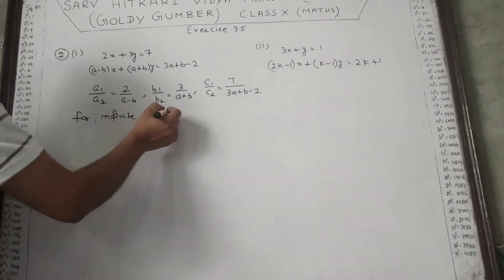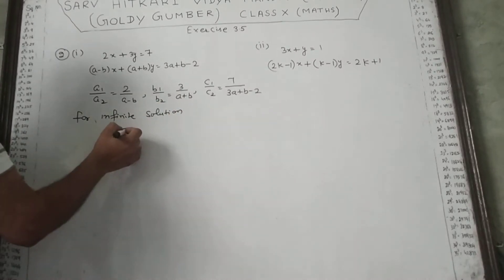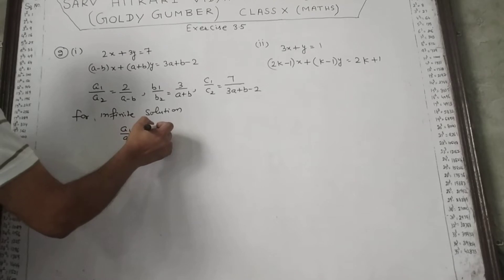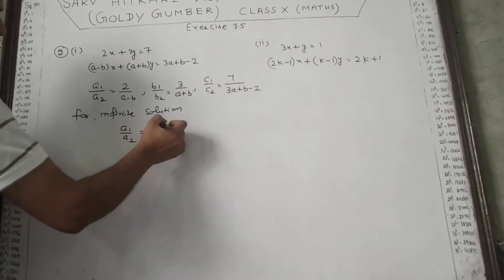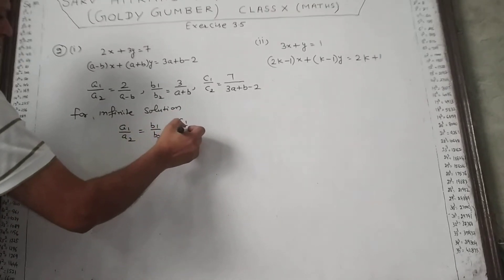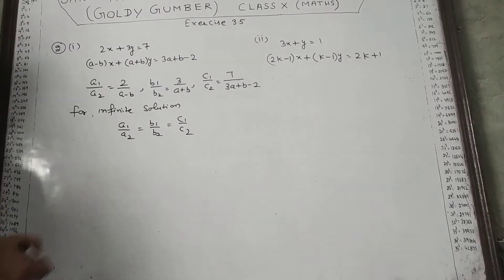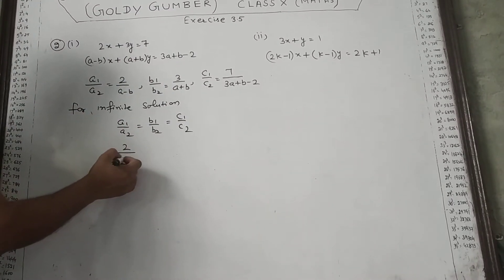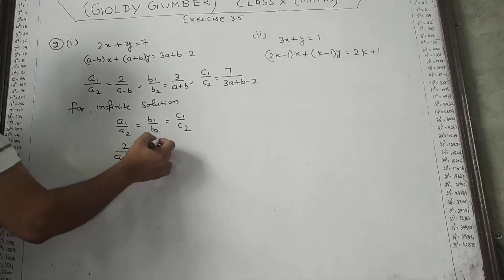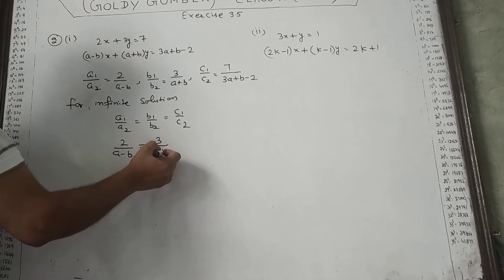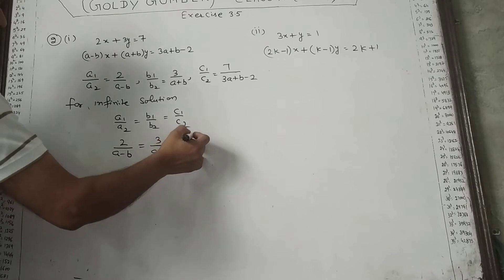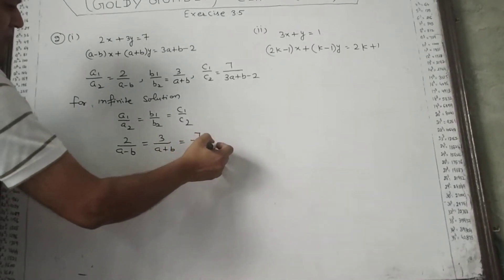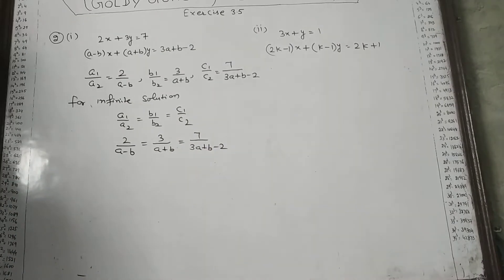For infinite solutions, the condition is a1 upon a2 equal to b1 upon b2 equal to c1 upon c2. So here we will see that 2 upon (a minus b) equal to 3 upon (a plus b) equal to 7 upon (3a plus b minus 2).